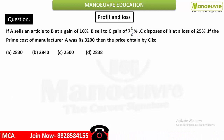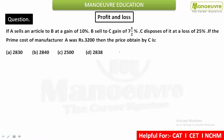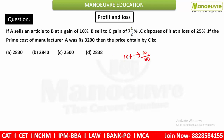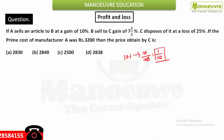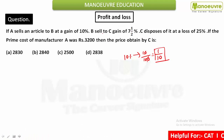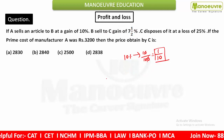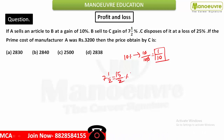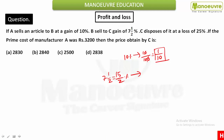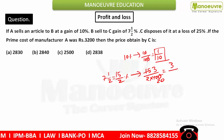We are going to solve this question using the fraction method. First, convert the percentages into fractions. 10% becomes 10/100, which reduces to 1/10. For 7½%, this is a mixed fraction — convert it: 7×2+1 = 15, so it becomes 15/2%. Then 15/2 divided by 100 gives 15/200, which reduces to 3/40. So 3/40 is the fraction form of 7½%.